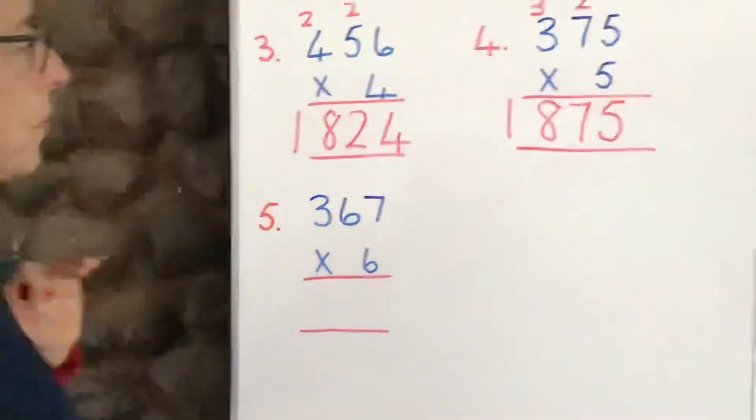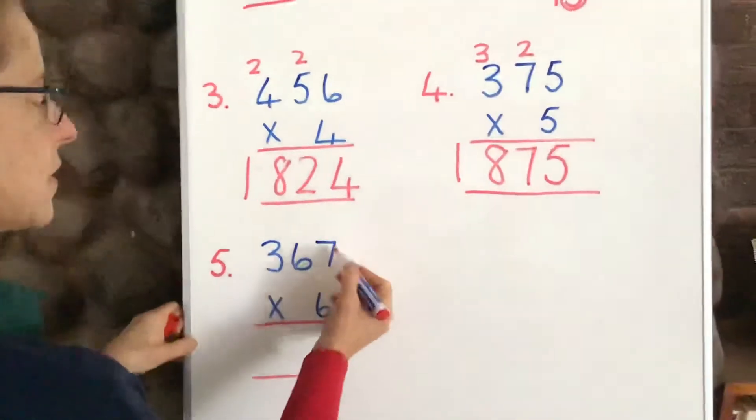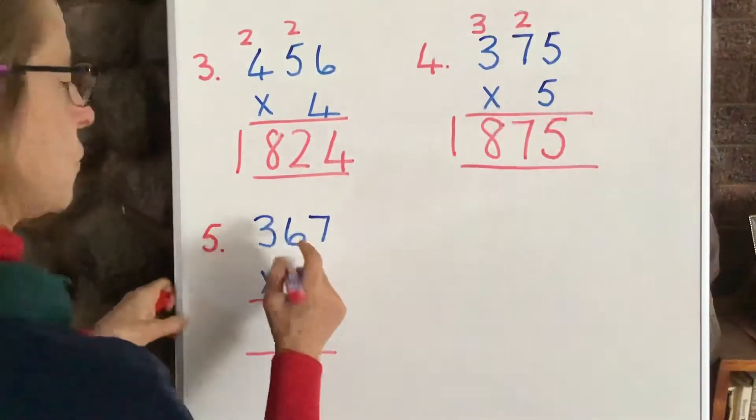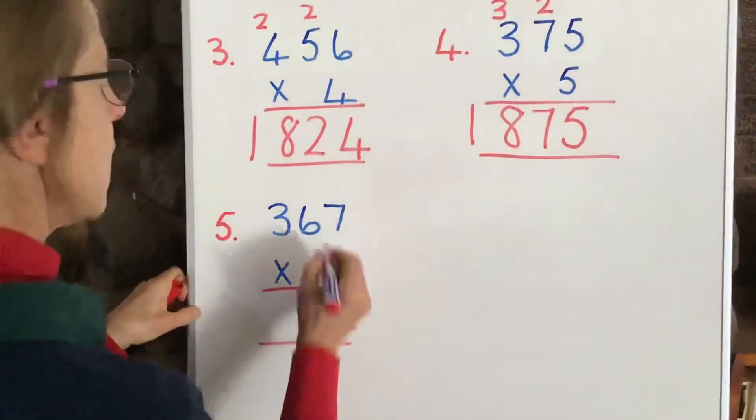5 times 3 is 15, plus 3 is 18. So, you have 1875. Let's move to our last example now. Now, 6 times 7 is 42. That's right, put down the unit, carry the 10.